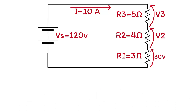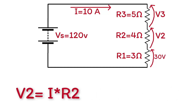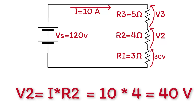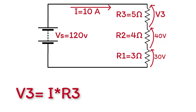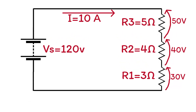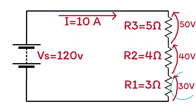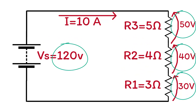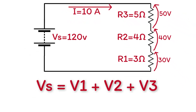Applying the same rule: V2 equals I times R2, which equals 10 times 4, giving 40 volts. V3 equals I times R3, which equals 10 times 5, giving 50 volts. Note that 30 plus 40 plus 50 equals 120 volts — the battery voltage equals the sum of the voltage drops across the resistors.